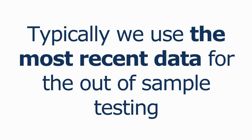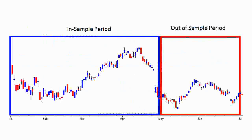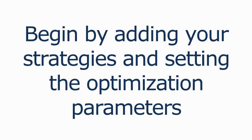The out of sample data can come from the beginning of the historical data or from the end, although we typically will use the most recent data for out of sample testing. The ratio of in sample to out of sample typically ranges from two to one to four to one — in other words, 33 to 20 percent of the total data will be reserved for the out of sample test. This image shows a two to one split applied to six months of daily data.